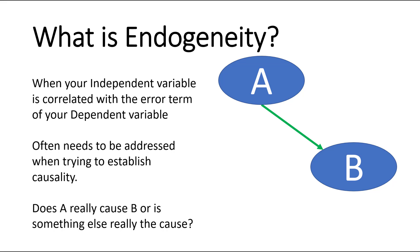When that happens, there's an assumption that maybe there's something else out there that's actually driving that influence to your dependent variable — maybe it's not the IV. And oftentimes you'll want to try to establish indigeneity, especially if you're trying to support causality in your model.